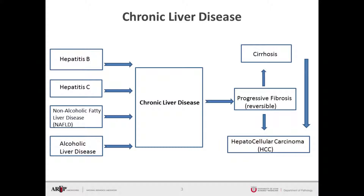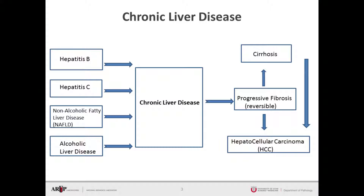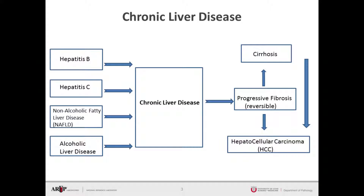Chronic liver disease can lead to chronic inflammation of the liver and progressive scarring of the tissue, or fibrosis. Fibrosis stages can be reversible to some extent. The end stage of scarring of the liver tissue is cirrhosis, which is an end-stage disease associated with complications and is largely irreversible. The other risk for those with chronic liver disease is that with increased progressive fibrosis, you can also develop hepatocellular carcinoma.